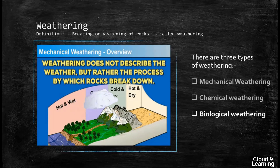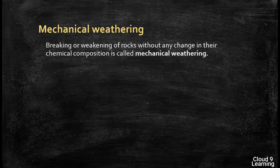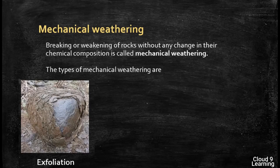Now we will study what is mechanical weathering. Breaking or weakening of rocks without any change in the chemical composition is known as mechanical weathering. Mechanical weathering occurs in three ways. The first one is exfoliation.